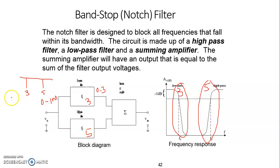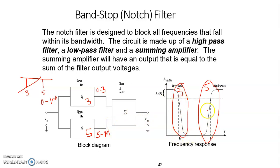For the low pass filter, frequencies from 0 to 3 kHz are allowed and those from 3 kHz to 1 MHz are attenuated. For the high pass filter receiving all frequencies from 0 to 1 MHz, it attenuates all frequencies below 5 kHz and passes all frequencies above 5 kHz. These two outputs are summed using a summing amplifier, so the resulting filter response is devoid of all frequencies in the range 3 kHz to 5 kHz while allowing all other frequencies to pass.